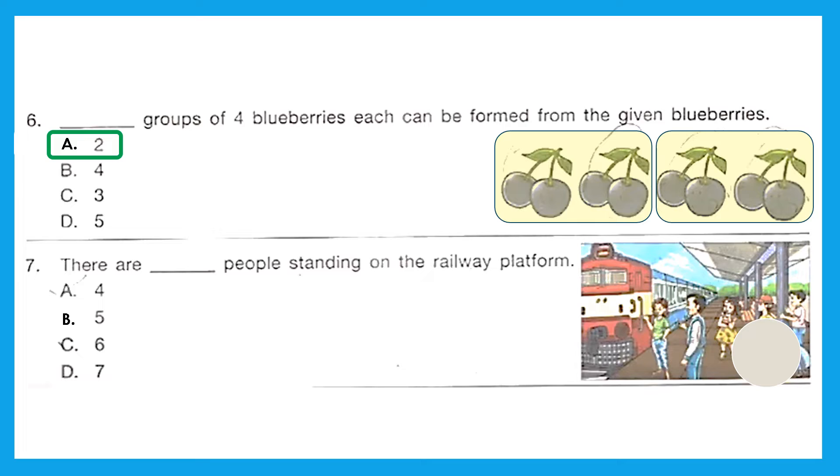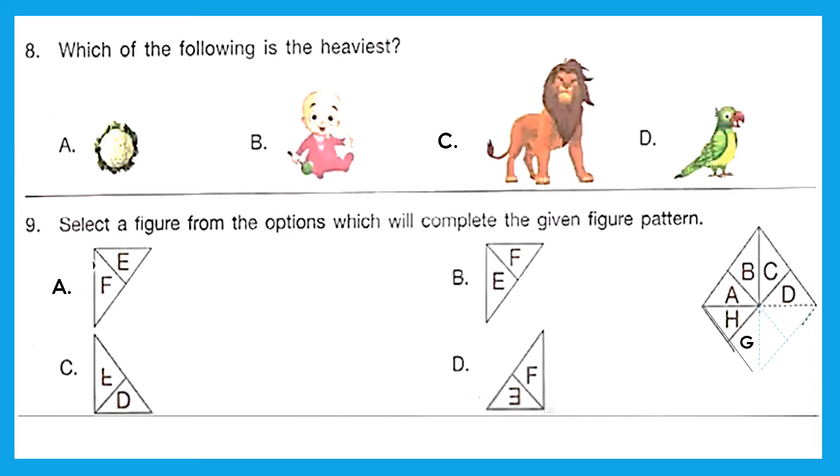Question 7: There are how many people standing on the railway platform? Let's count: one, two, three, four, and five. Option B, five is the right answer. Question 8: Which of the following is the heaviest? That means having the highest weight, the very heavy one, and it's very clear that it is option C, lion.